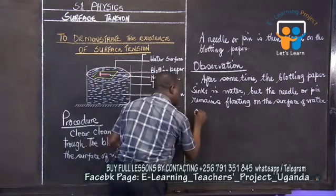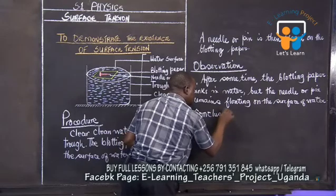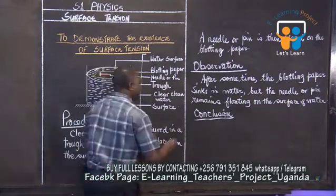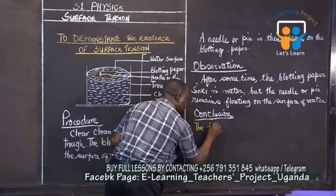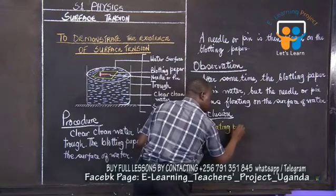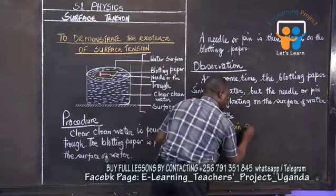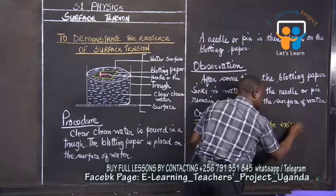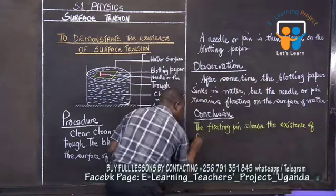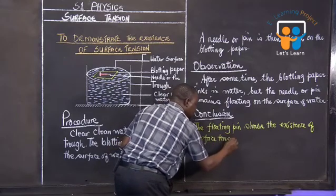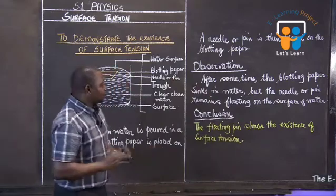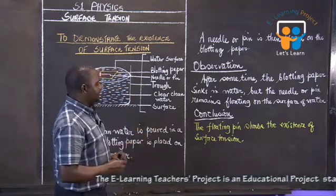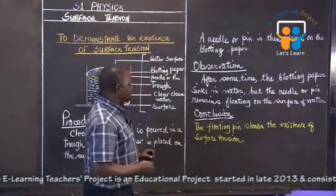So what's the conclusion? What's going to be our conclusion? You're going to simply say that the floating pin or needle shows the existence of surface tension. You could also say that the pin floats due to the existence of surface tension — that would also be marked correctly. We are saying that the floating pin shows the existence of surface tension.